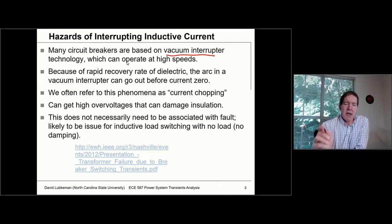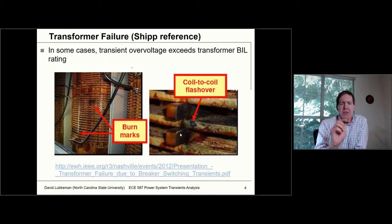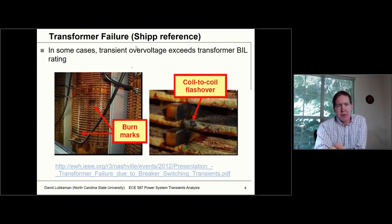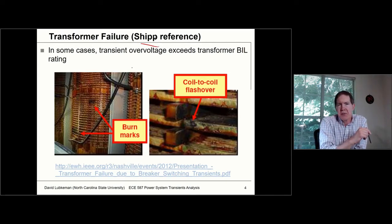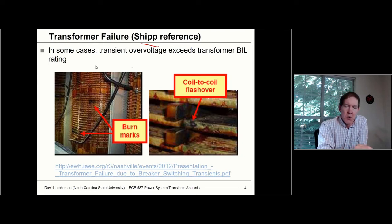There's a case shown in an IEEE paper I wanted to discuss before we go into the theory — it led to transformer failure. This paper was written by David Shipp, who is pretty well known in the industrial power area. He shows in his paper the insulation of a dry-type transformer, showing the windings around the core.